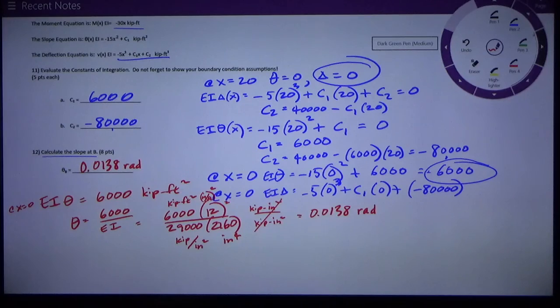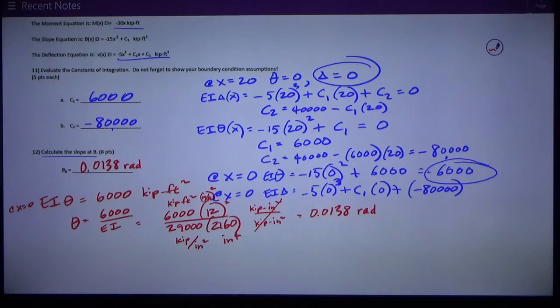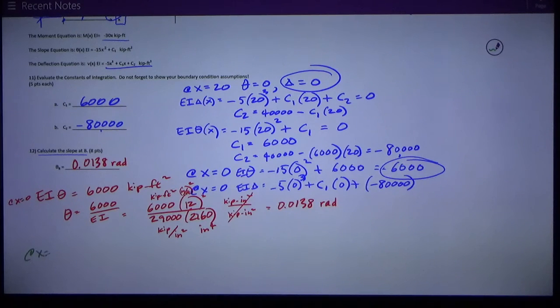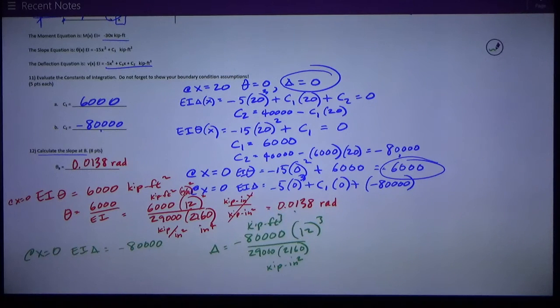Now, I was not asked it, but I could figure out the deflection at point B. It's an easy calculation. Let's do it real quick. It's just going to be that negative 80,000 divided by EI. So, at X equals 0, EI delta is equal to negative 80,000. Therefore, delta is equal to negative 80,000. And, its units are kip feet cubed divided by EI, which is still 29,000 and 2160. Remember that I have kip inches squared on the bottom. I need to multiply by 12 cubed, because 12 is number of inches per foot. To get rid of that feet cubed, I need to cube that one. So, that's going to give me a number of negative 2.207.